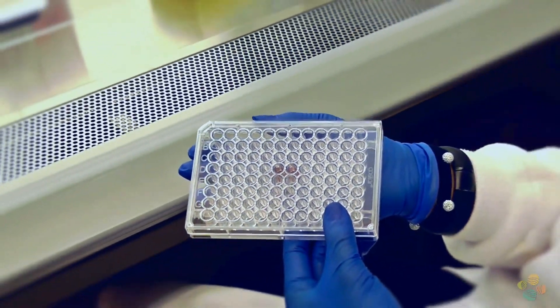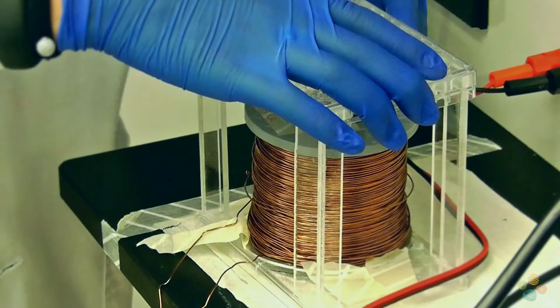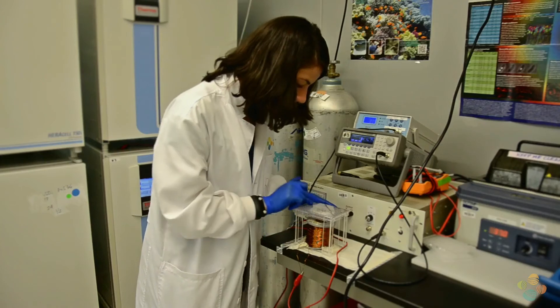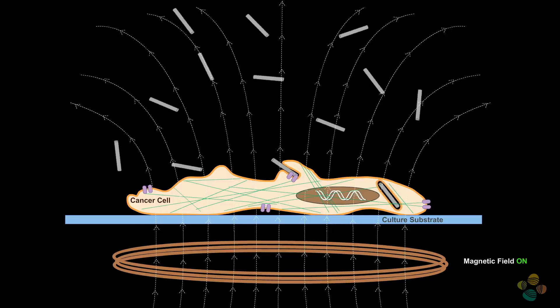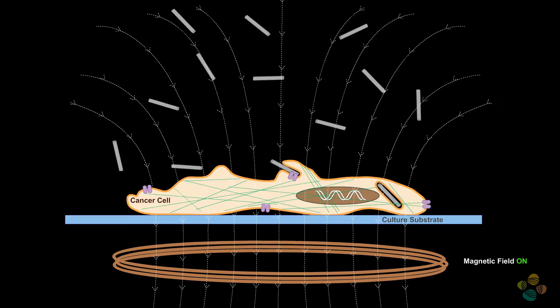We let them incubate for a while and we apply a low frequency and intensity magnetic field that stimulates the nanowires affecting some cellular processes. The cells are placed on top of the coil that produces a magnetic field. This will cause the nanowires to vibrate and because they're in contact with the cells it will trigger cellular processes that might lead to cell death.